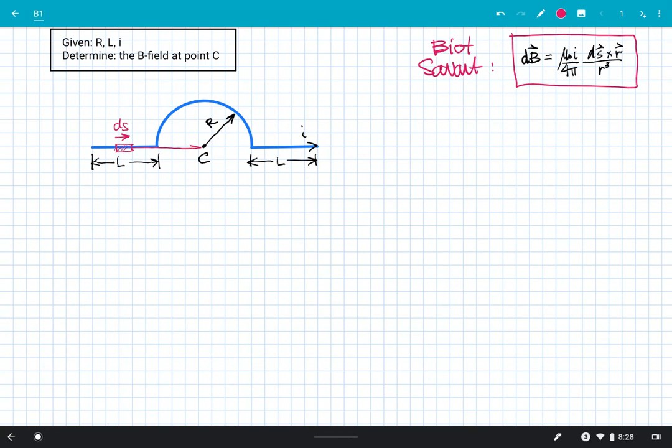So R, my R vector, is going to point from the source current to point C there. That's my R vector. So those two vectors are parallel for that straight segment.